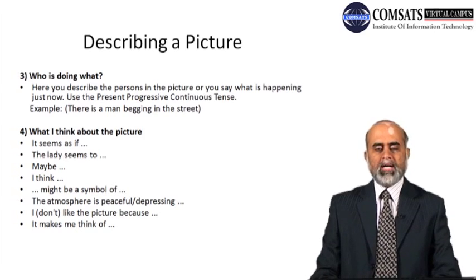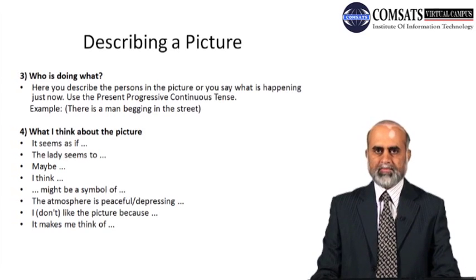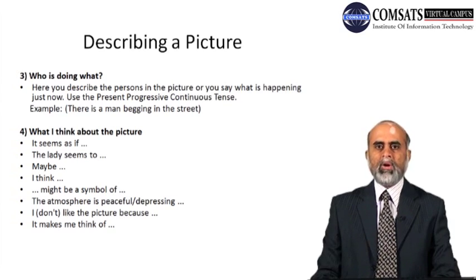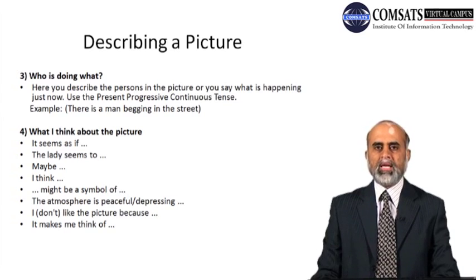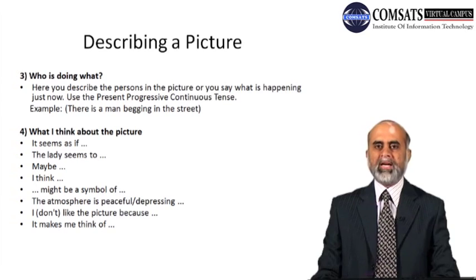The next step is to explain who is doing what, or what is happening. Here you describe the persons in the picture or say what is happening — for example, 'The wind is blowing,' or 'Someone is playing piano.' For this, you use present continuous tense: 'He is doing,' 'They are playing.' For example: 'There is a man begging in the street' or 'A man is begging in the street.'